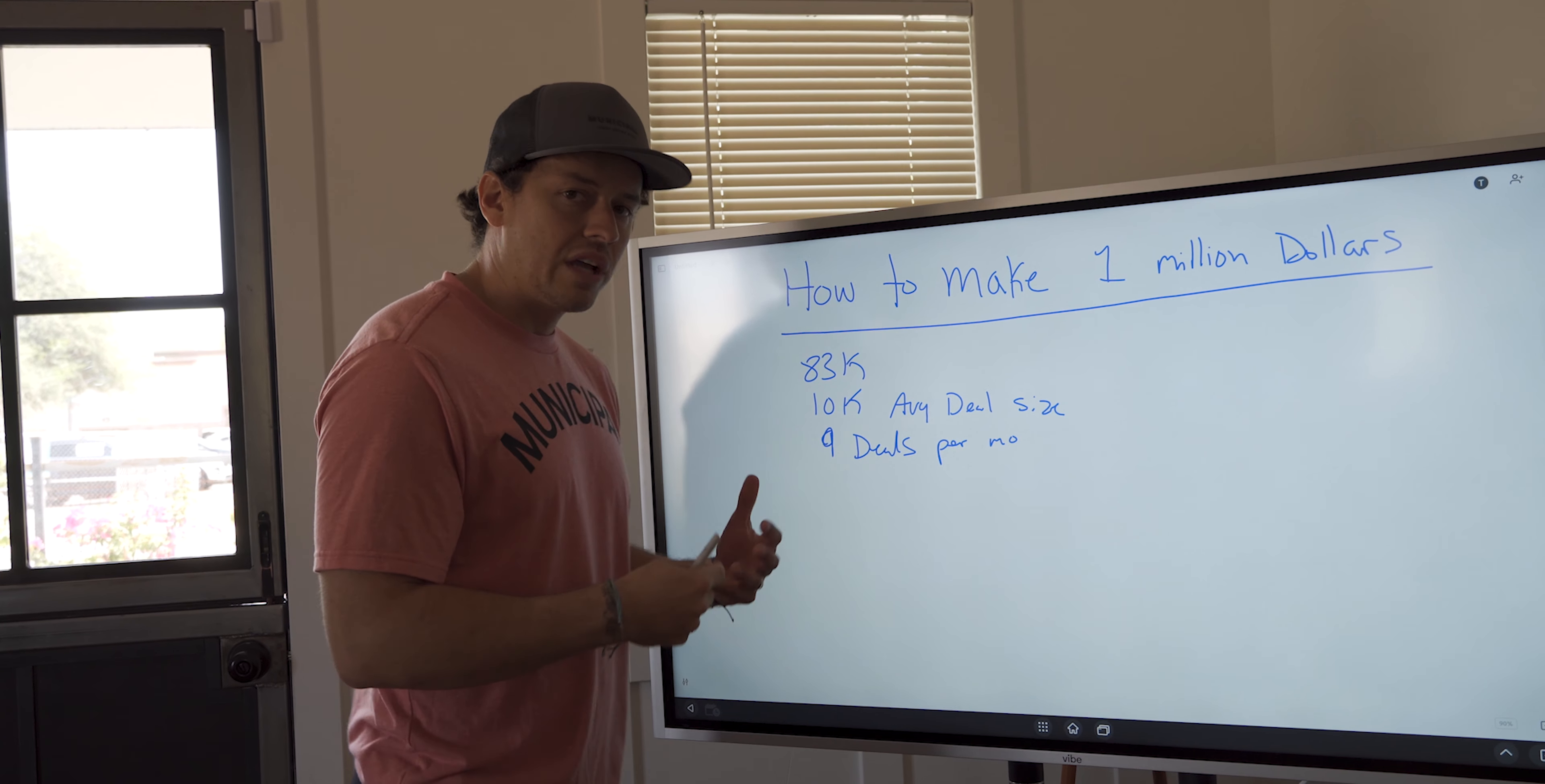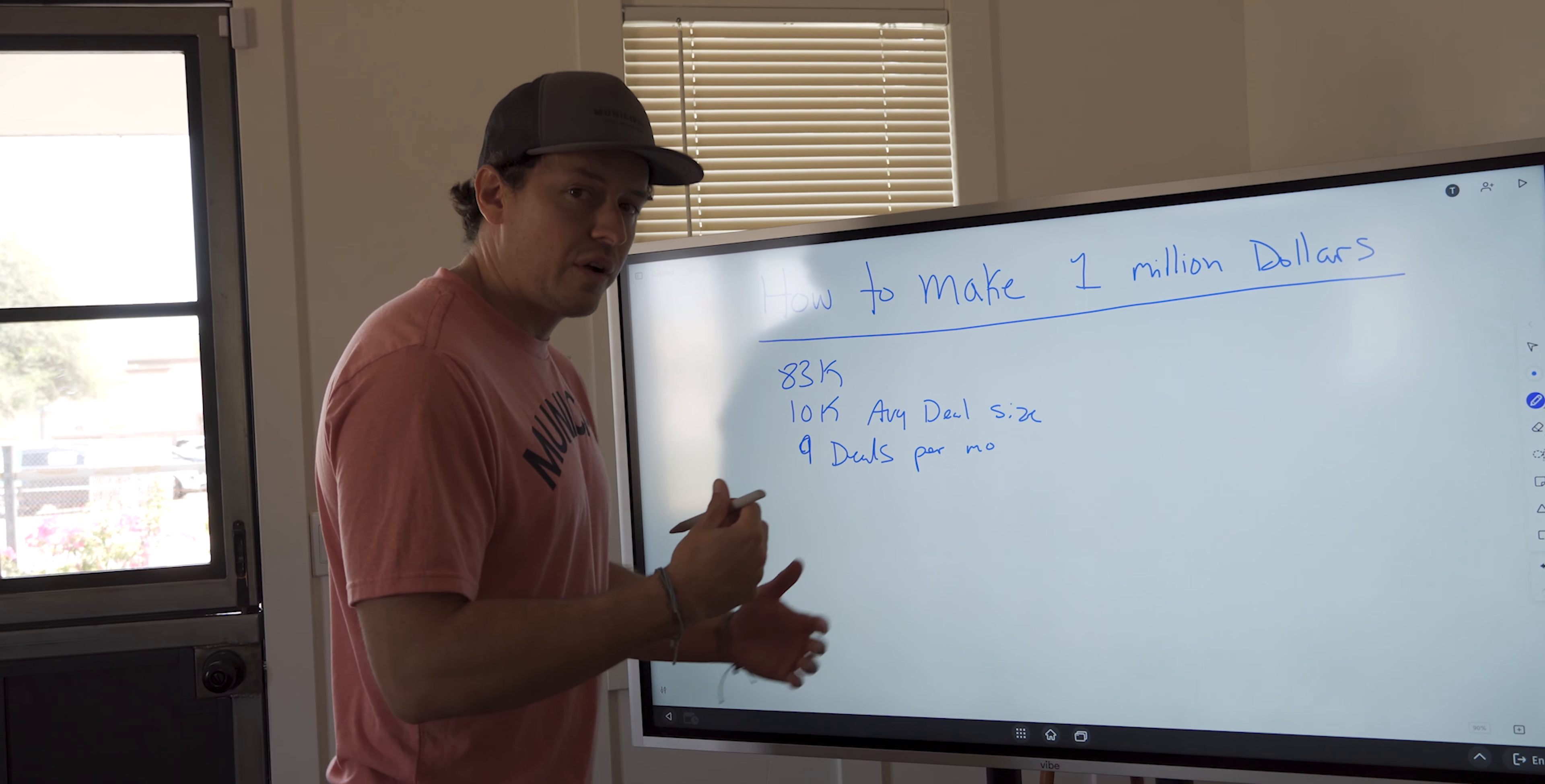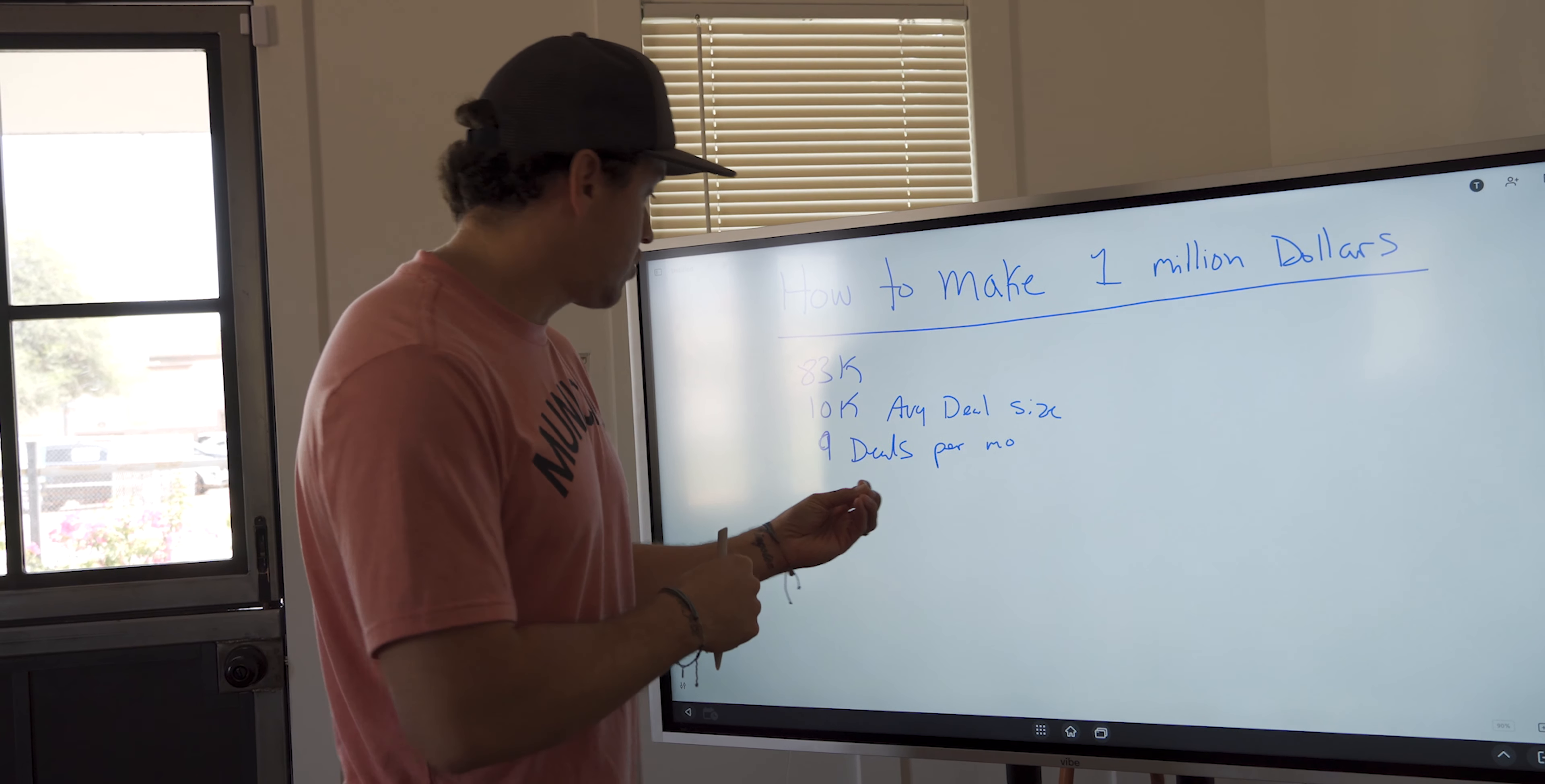So I can start to really look at my business systems and say, okay, how much action does it take for me to assign nine deals a month at an average size of $10,000? This is where I can start to really figure out how my partners, myself, my acquisitions reps, my underwriters, how much work does it take to achieve this goal?